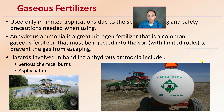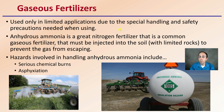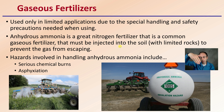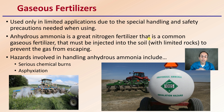There are also gaseous forms of fertilizer, used only in limited applications due to special handling and safety precautions. Anhydrous ammonia is a common gaseous form and a great nitrogen fertilizer, but it must be injected into the soil, and the soil should have limited rocks to prevent the gas from escaping. Hazards include serious potential for chemical burns and asphyxiation, so be cautious with this type of fertilizer.